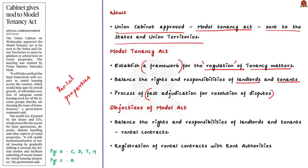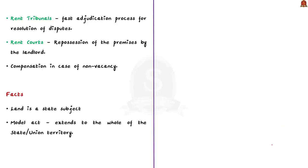Let us discuss the aims of the Model Tenancy Act one by one. Firstly, it ensures the balance between the rights and responsibilities of landlords and tenants through rental contracts. Secondly, it allows for the registration of rental contracts with rent authorities and outlines the process of fast adjudication for resolution of disputes through rent tribunals. Further, it provides guidelines for repossession of premises by the landlord through rent courts. Finally, compensation in case of non-vacancy is another objective.